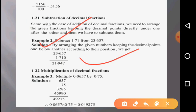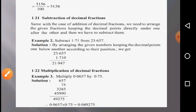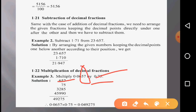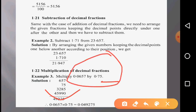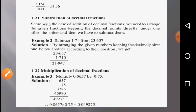Now we will see multiplication of decimal fractions. It is also very easy. Example three: multiply 0.0657 by 0.75. At first, we forget the decimal part. We see 657 and 75. After multiplying these, we get 49,275. Then we count the total decimal places and put the decimal point accordingly to get 0.049275.